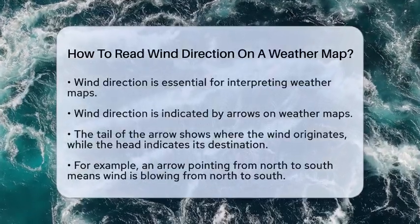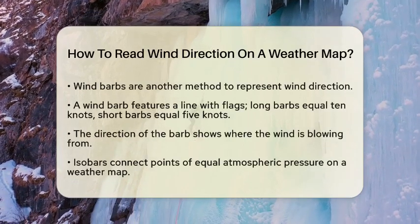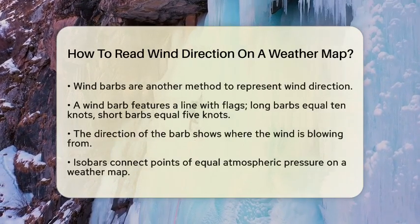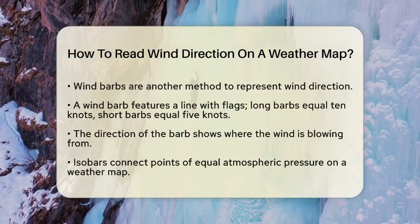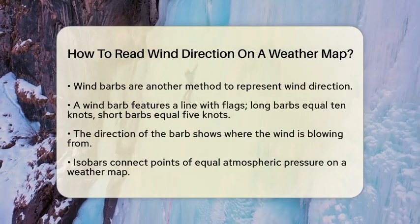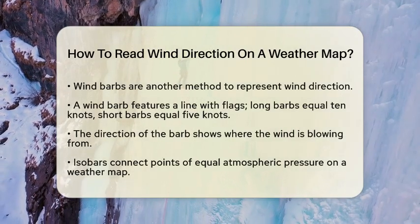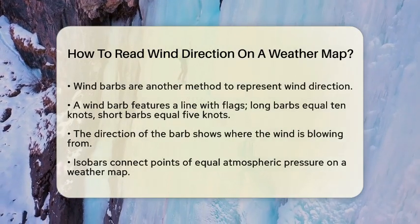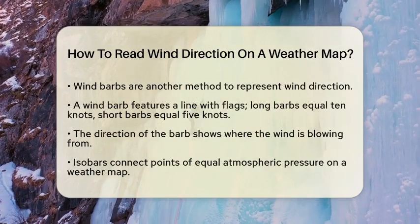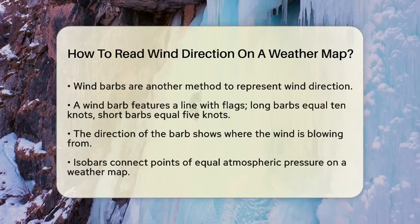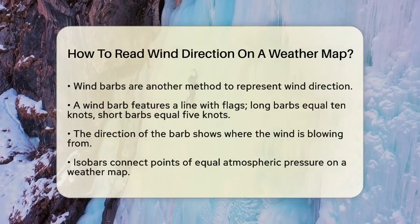Another common method is the wind barb. A wind barb consists of a line with flags or pennants attached. Each long barb represents 10 knots of wind speed, while each short barb represents 5 knots. The direction of the barb indicates where the wind is blowing. So if you see a barb pointing east, the wind is coming from the west and moving toward the east.